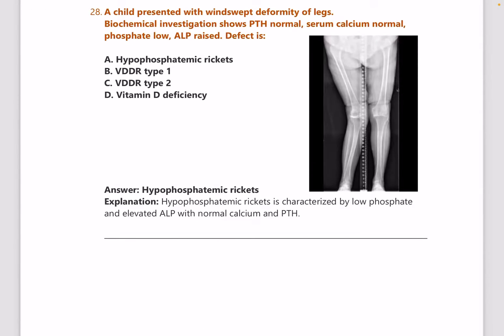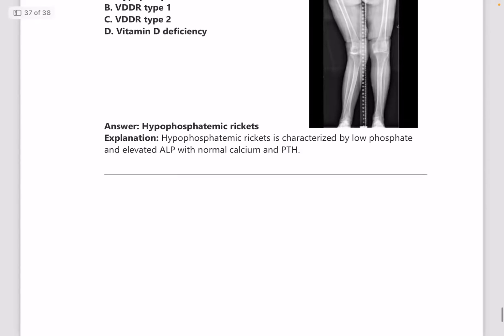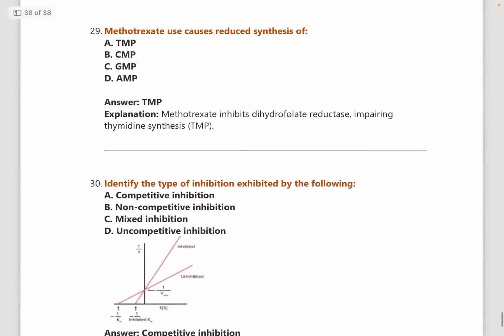Next: a child presented with wind-swept deformity of the legs — as you hear 'wind-swept deformity,' you can understand it is related to rickets. Biochemical investigation shows PTH normal, calcium normal, phosphate low, and ALP raised — this is hypophosphatemic rickets. There is a chart comparing osteoporosis, hypophosphatemic rickets, and normal rickets in terms of PTH, calcium, phosphate, and ALP — please go through it.